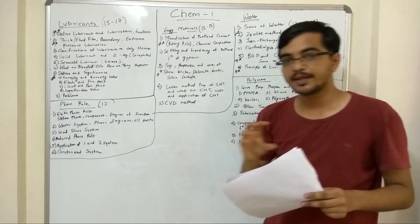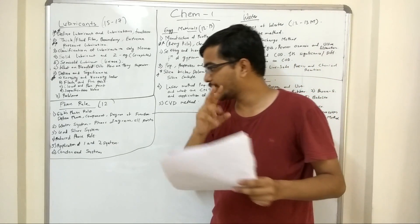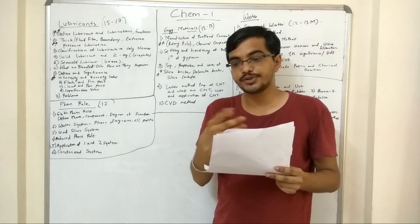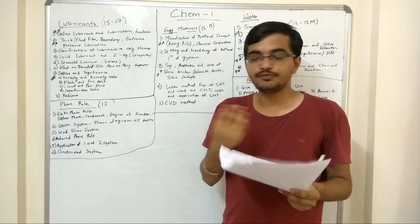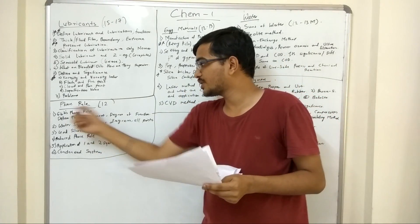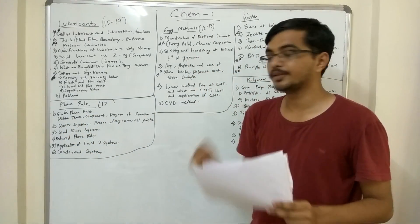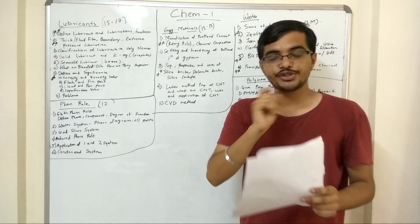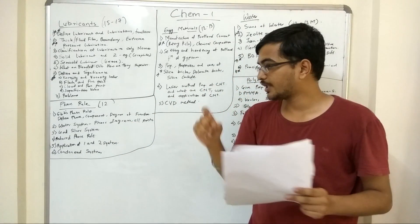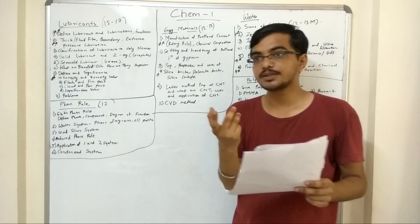Then phase rule - again a very simple chapter. There are around 2-3 very important questions from this chapter, and then a few small questions. One of the first important questions is: what is Gibbs phase rule - define phase, component, and degree of freedom. The definition has to be very proper, exactly as it is written in the textbook. Define component and degree of freedom - can be asked for 3 marks or 6 marks.